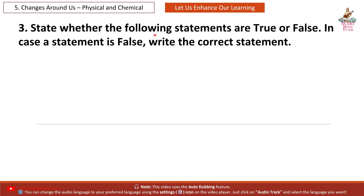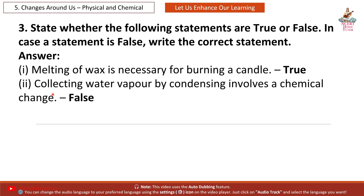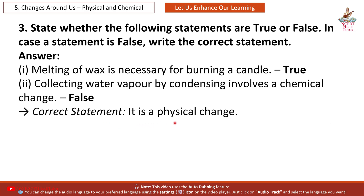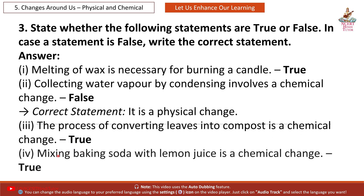Question 3: State whether the following statements are true or false. In case a statement is false, write the correct statement. Answer — 1st: melting of wax is necessary for burning a candle — True. 2nd: collecting water vapor by condensing involves a chemical change — False. Correct statement: it is a physical change. 3rd: the process of converting leaves into compost is a chemical change — True. 4th: mixing baking soda with lemon juice is a chemical change — True.